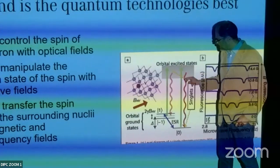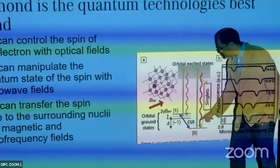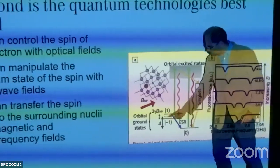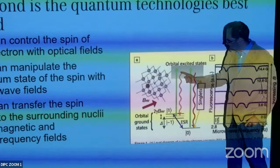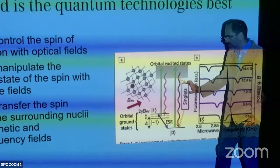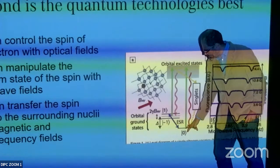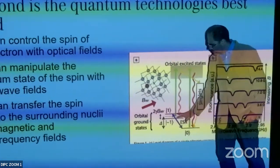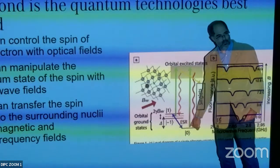If the electrons are in m_s = 0, you get lots of red fluorescence; in m_s = ±1, you get less red light. So the fluorescence changes depending on the electron spin. The spin states are separated by magnetic fields, and by applying a resonant microwave field, you can drive transitions between m_s = 0 and m_s = ±1.